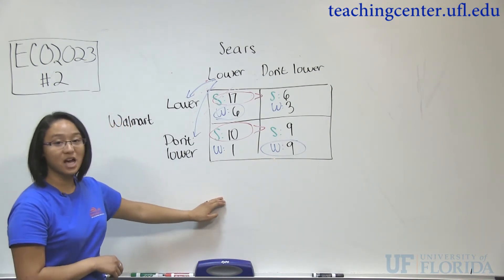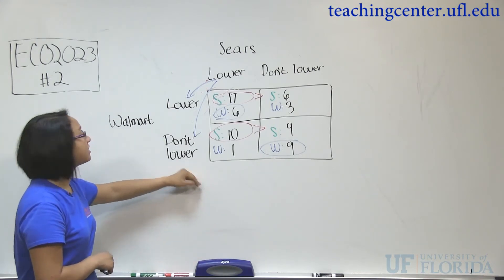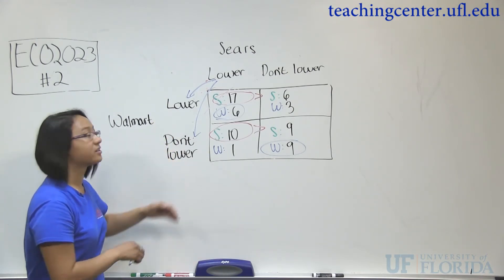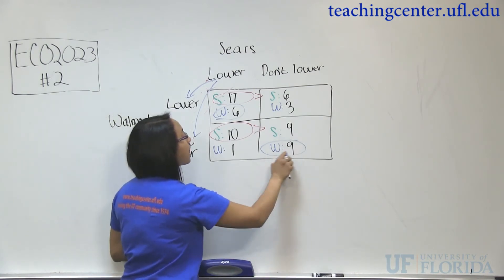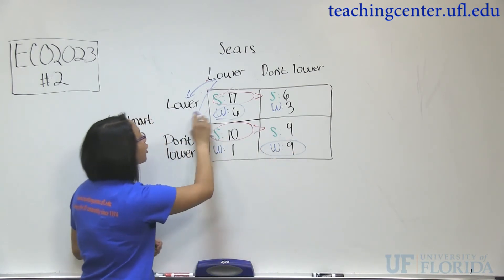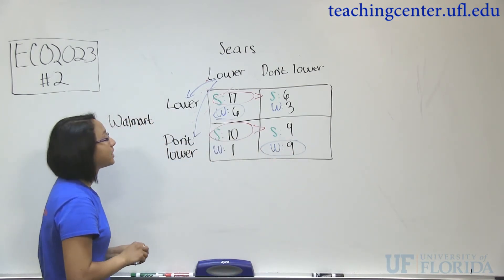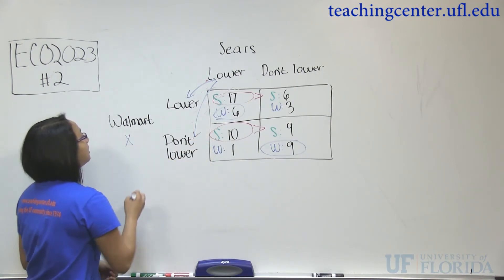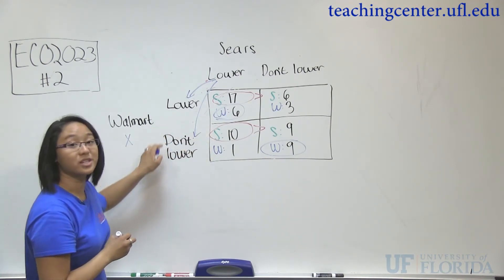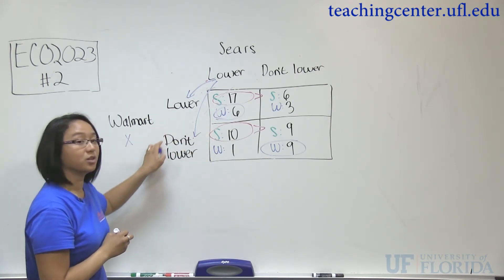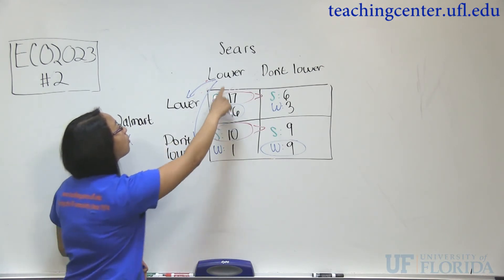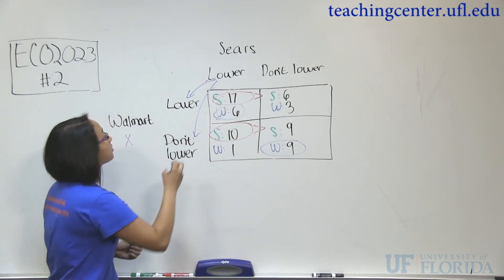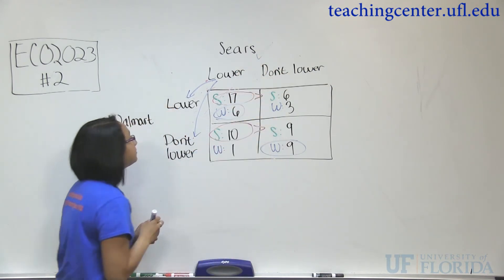Does Walmart have a dominant strategy? They don't, because they will lower their price in one scenario and not lower their price in another. They'll not lower their price for a profit of 9, but they'll lower their price for a profit of 6. That's not a dominant strategy because they're not going to do the same option regardless. Sears will always lower their prices, so Sears does have a dominant strategy.